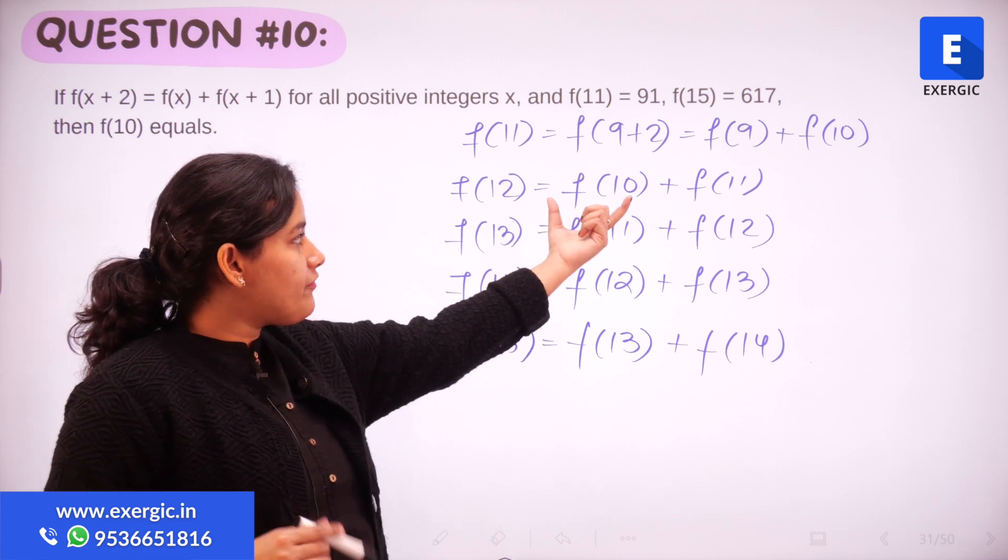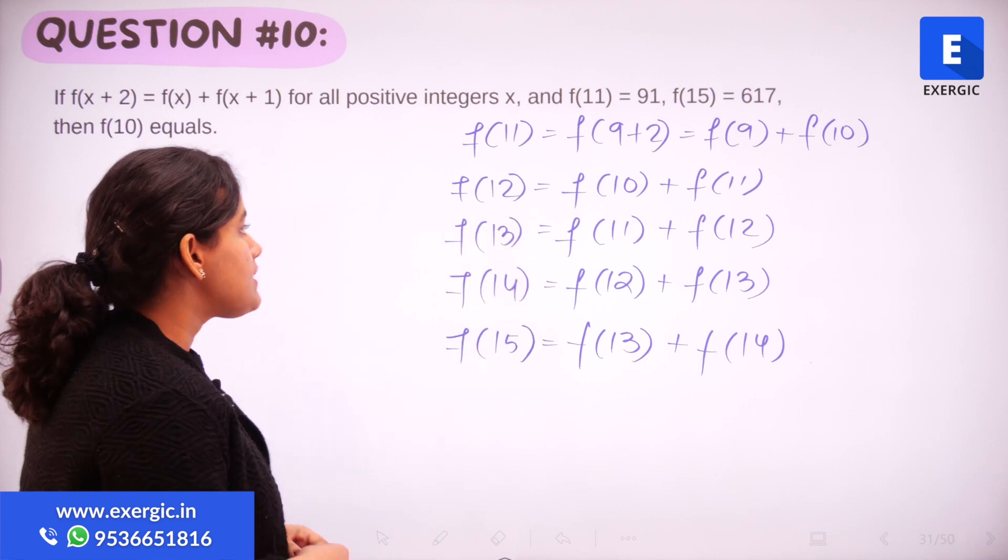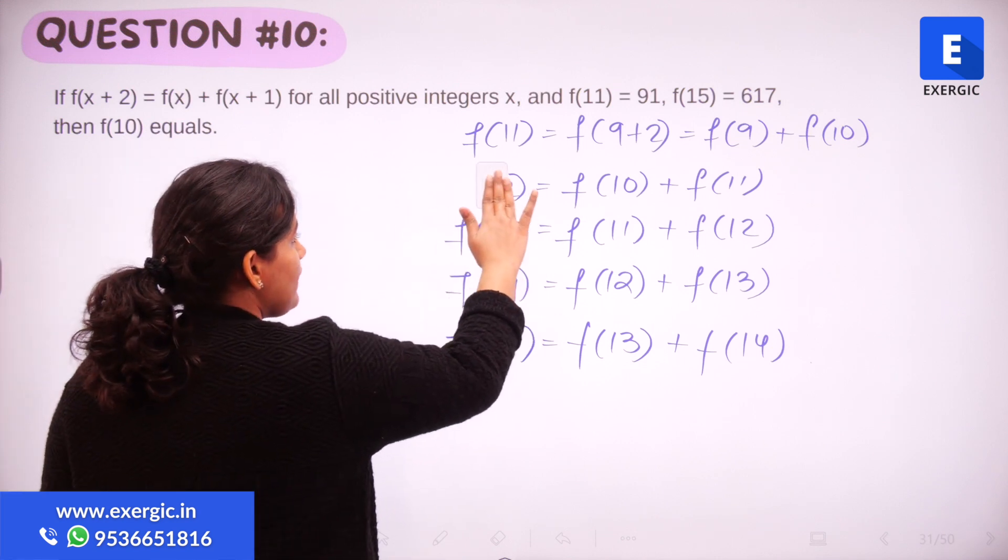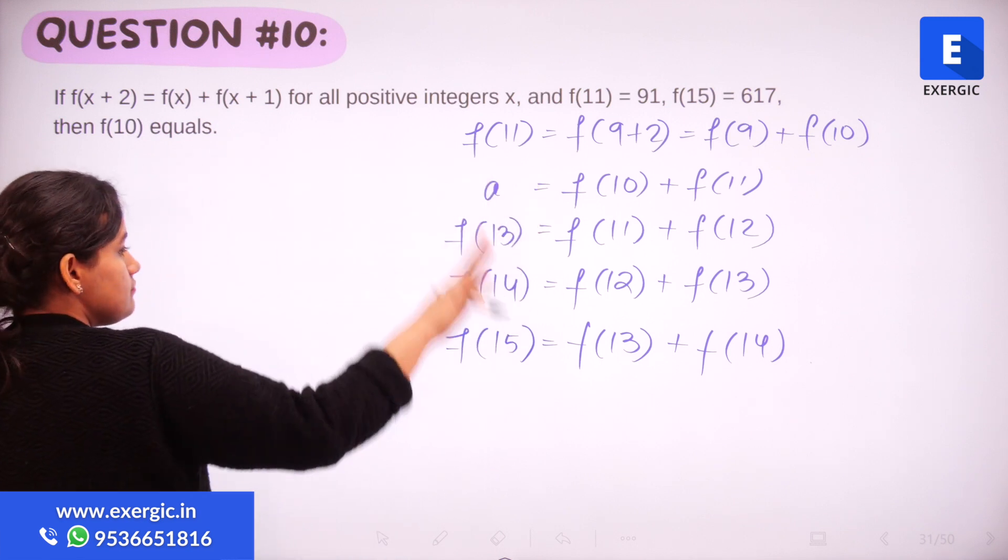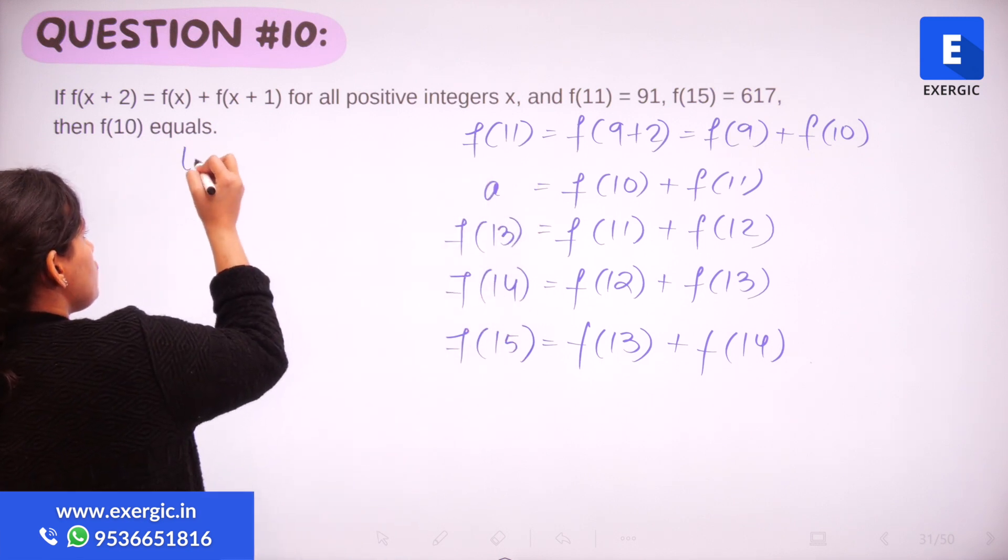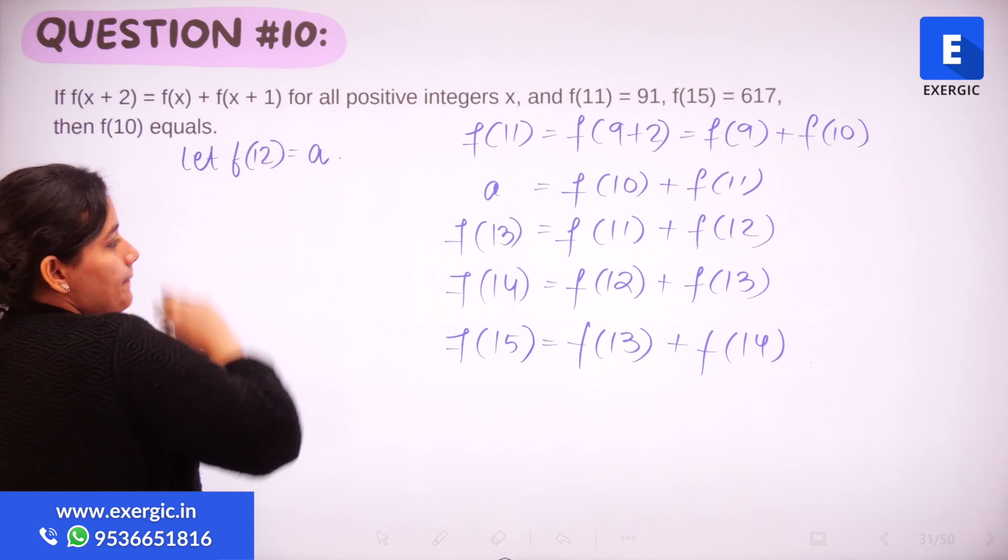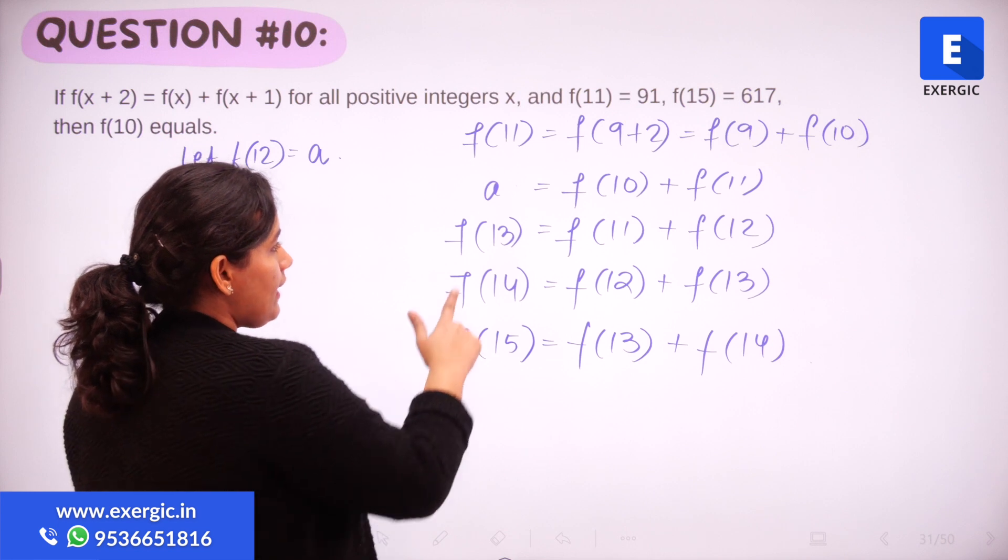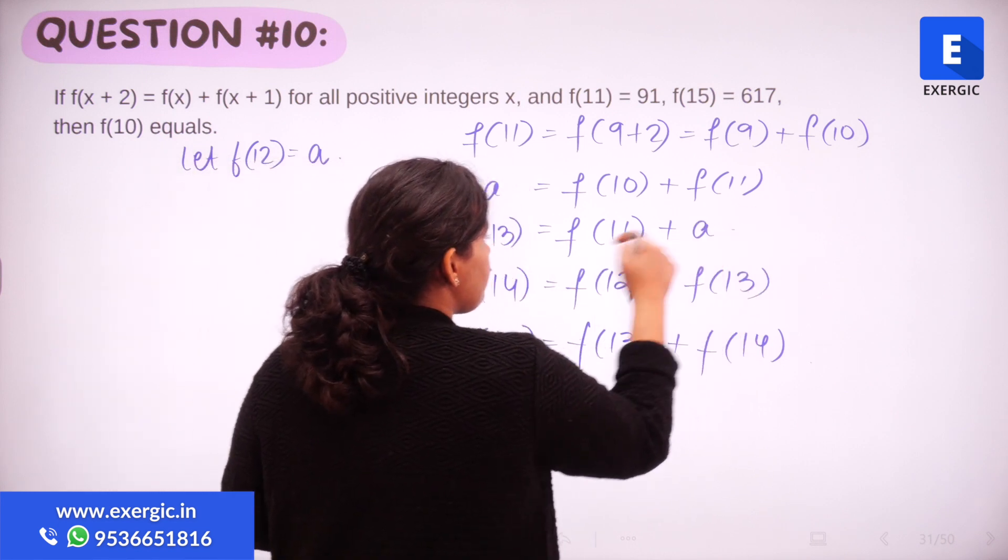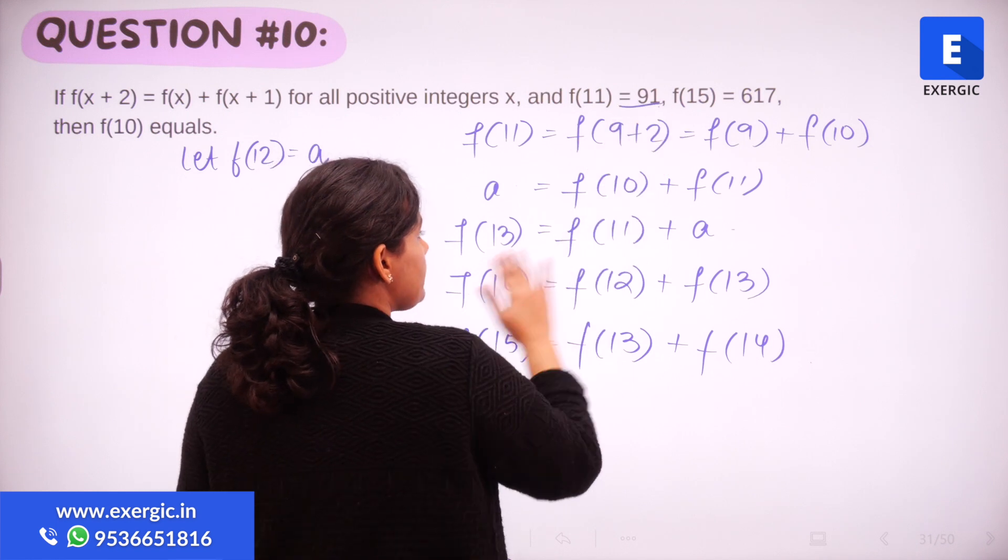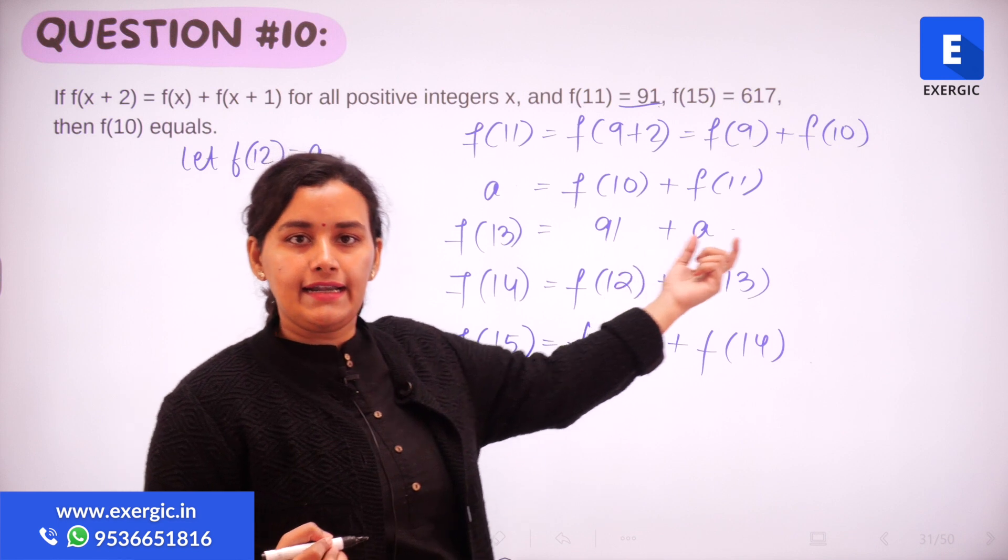So let us assume this f(12) to be let's say a, just to make this entire representation much simpler. So let f(12) be equal to a. We will be having f(13) as f(11) plus a. Now do I know f(11)? Yes. f(11) has been given to us as 91. So I have f(13) is 91 plus a.